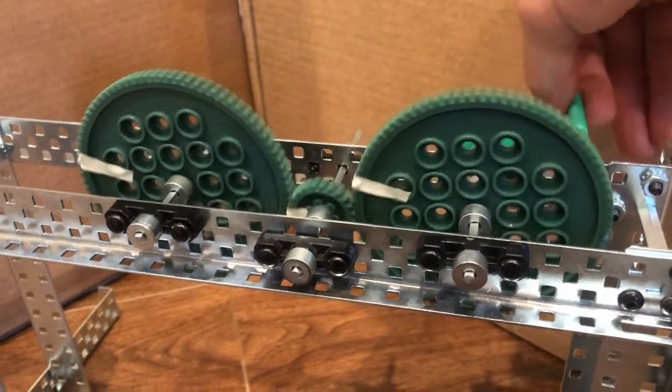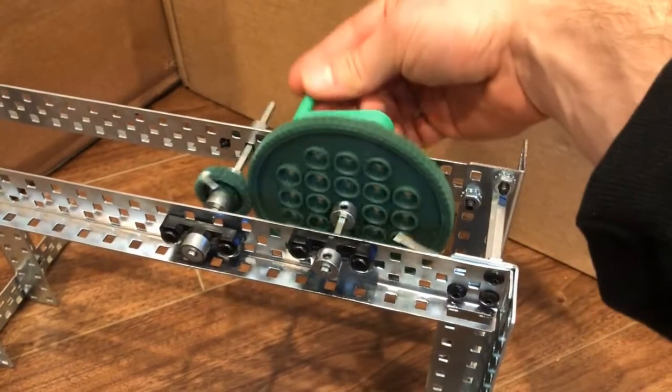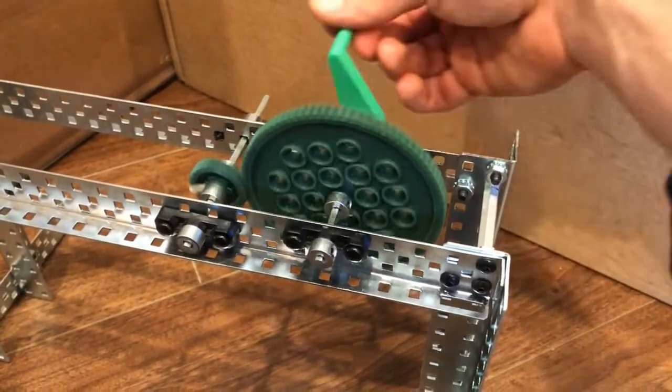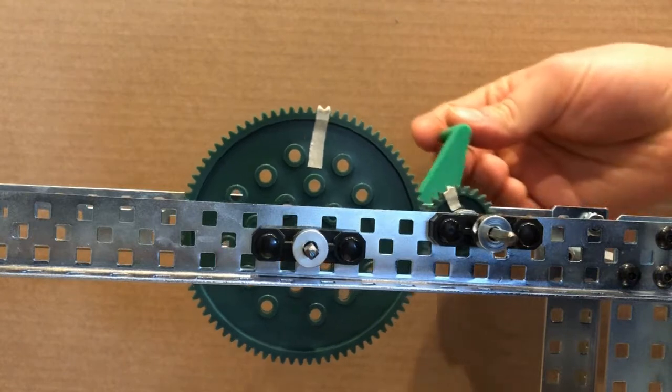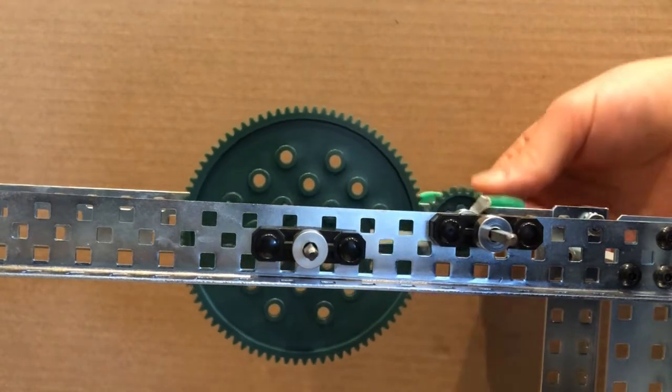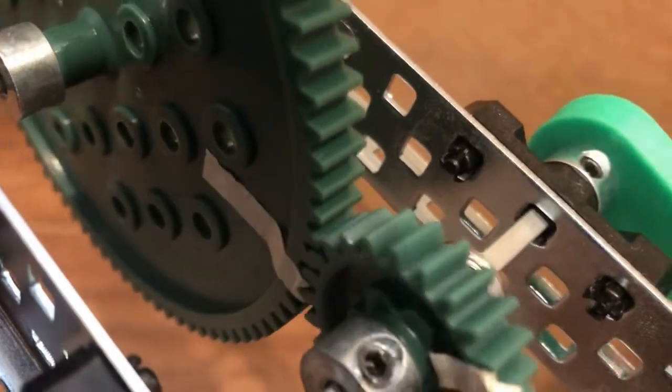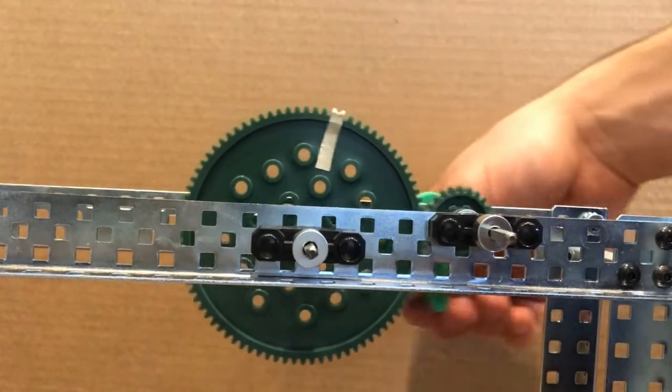To increase the speed of an output, a larger gear would need to be used for the input and a smaller one for the output. This also decreases torque. If this is flipped—a smaller gear for the input and a larger gear for the output—speed decreases and torque increases. Simple gears do work in both directions, either clockwise or counterclockwise.